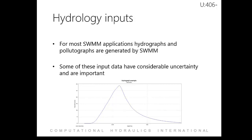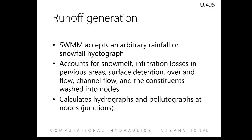For most SWMM 5 applications, the runoff hydrograph and pollutagraphs are generated by SWMM 5. If you have an external source generating your input hydrographs, you can import these inputs into PC SWMM. For the runoff portion of the model, SWMM 5 accepts continuous event-based rainfall or snowfall hydrographs. From there, it accounts for snowmelt, infiltration losses, surface detention, overland flow, channel flow, and any pollutants washed into the node.